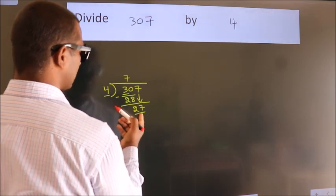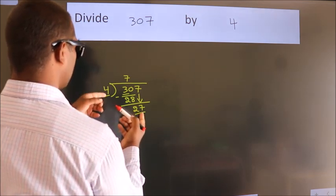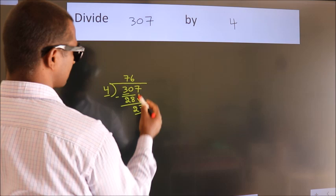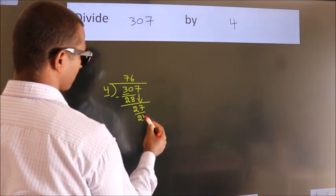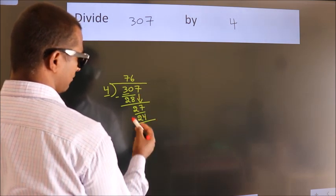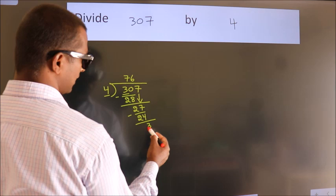A number close to 27 in 4 table is 4 6s, 24. Now we subtract. We get 3.